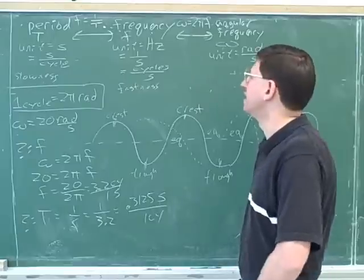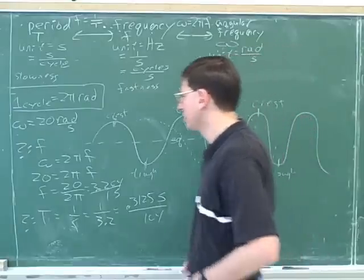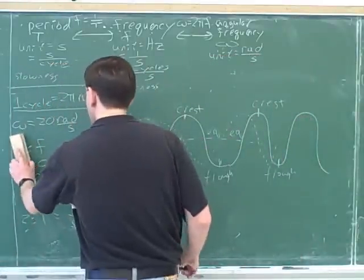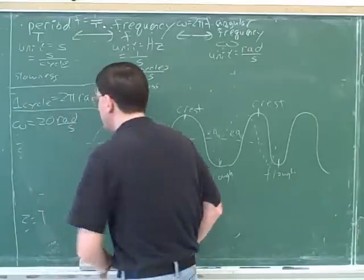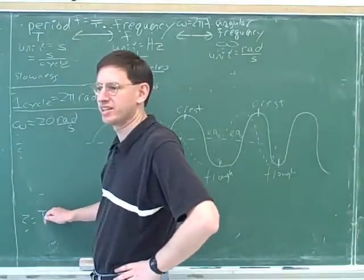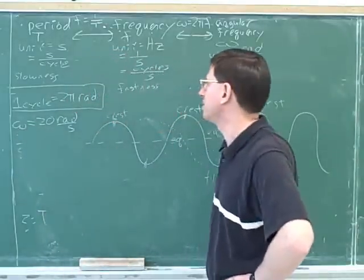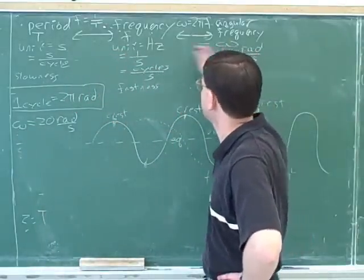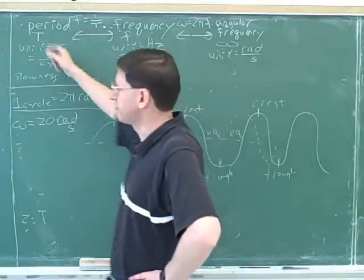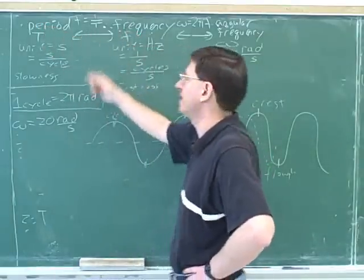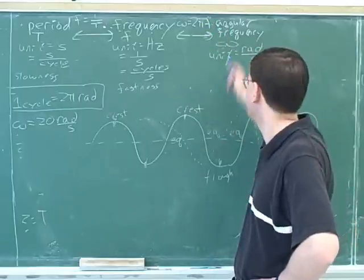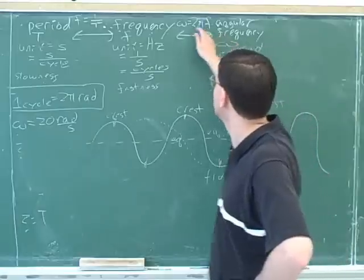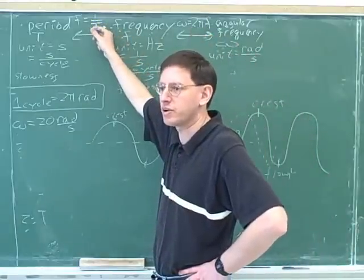Alright, now I made this too easy. On a real test question, they would just say, here's omega, what's the period? And then you would have to say to yourself, aha, first I have to go from omega to frequency, and then I have to go from frequency to period. Alright, so this is the advantage of having these in one chart, so you can see the relationship between these. So you can say, oh, if I want to start with omega and go to the period, first I use this equation, and then I use this equation.